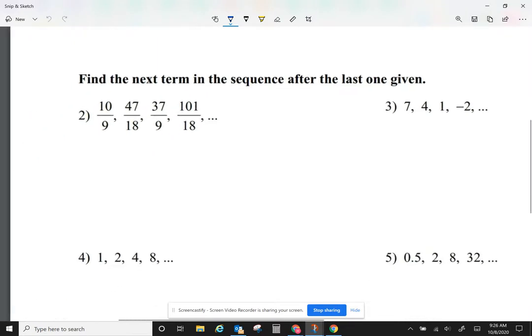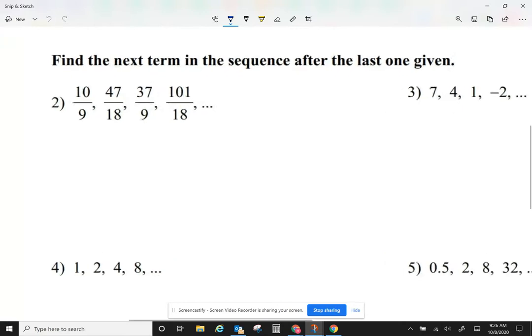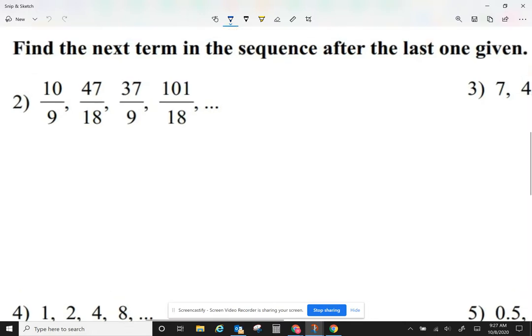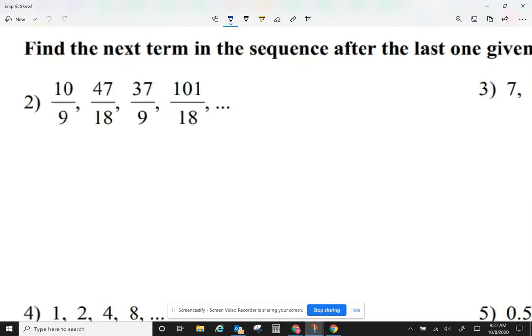Let's take a look at examples. Find the next term in the sequence after the last one given. First of all, I see their fractions: 10 over 9, 47 over 18, 37 over 9, 101 over 18. I see their fractions, so I'm going to assume the next number is a fraction.